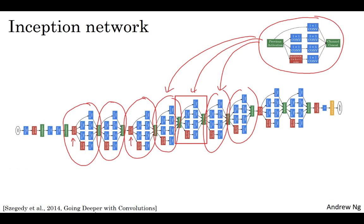It turns out that there's one large detail to the inception network, if you read the original research paper, which is that there are these additional side branches that I just added. So what do they do? Well, the last few layers of the network is a fully connected layer, followed by a softmax layer to try to make a prediction. What these side branches do is it takes some hidden layer, and it tries to use that to make a prediction. So this is actually a softmax output, and so is that.